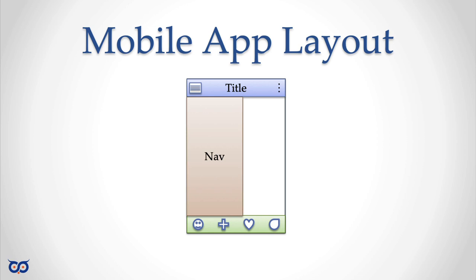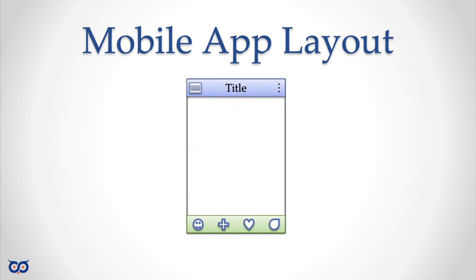The drawer doesn't have to be navigation. For example, if your screen shows information about a user or a building, you might not want to overwhelm them with all the details upfront. You can put that extra detail in a drawer — like a kitchen drawer, it's hidden until needed. It slides out to reveal more detail or navigation to other parts of your app, and when closed they return to the main screen.